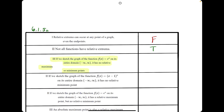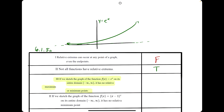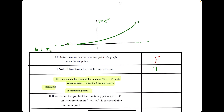The next statement: if we sketch the graph of e to the x on its entire domain, it has no relative maximum or minimum points. The function e to the x is basically just starting low and increasing the entire time. Because it's increasing the entire time, it does not change from increasing to decreasing or decreasing to increasing. Therefore, it has no relative max, nor does it have a relative minimum. So this statement is true.